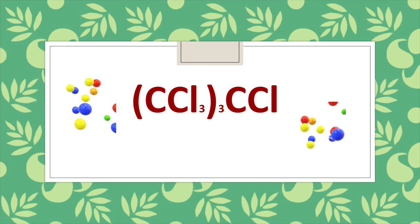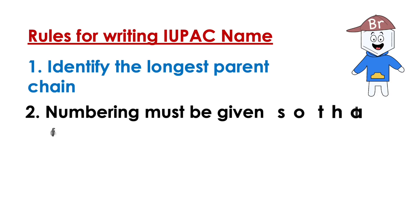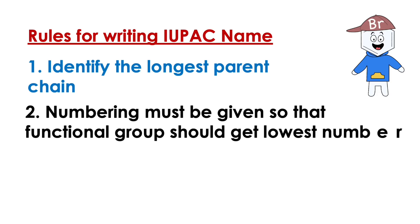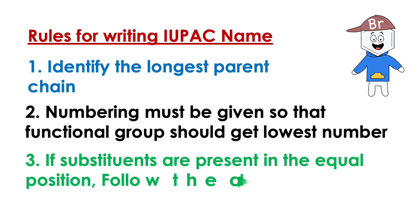To write IUPAC name, certain rules are there. According to the rules, identify the longest parent chain. Numbering must be given so that functional group should get the lowest number.